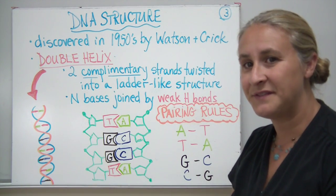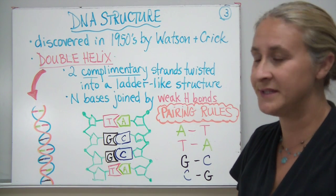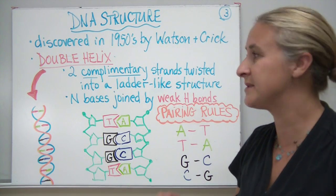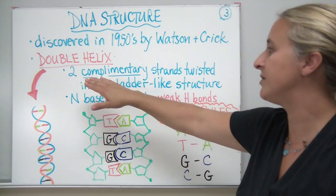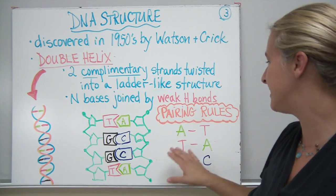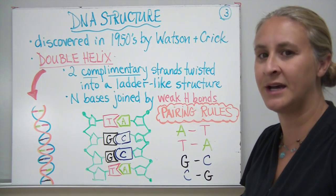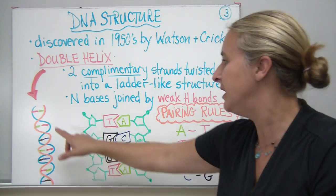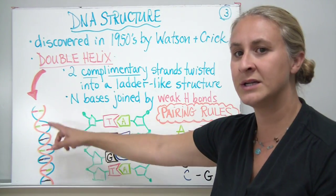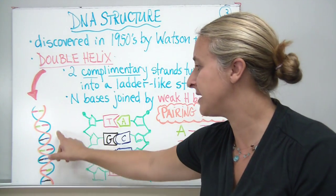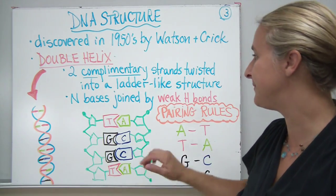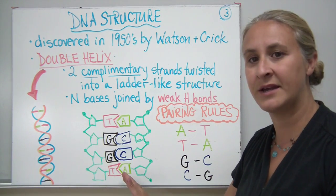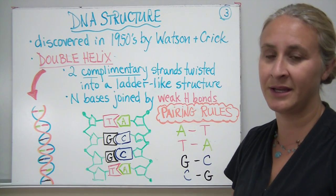DNA structure was discovered in the 1950s by two researchers called Watson and Crick. It's pretty historic — they discovered that the DNA structure is what's called a double helix. They were able to figure this out using special types of x-rays. The DNA double helix has two complementary strands, meaning we have an opposite pairing on each side. The strands are twisted into a ladder spiral-like structure. The inside rungs of the ladder are made up of the nitrogenous bases, and the outside portions are made up of the phosphate and the sugar. The nitrogenous bases in the center are joined by weak hydrogen bonds, which are weak enough that the strand can actually break apart in order to replicate and carry out other processes.